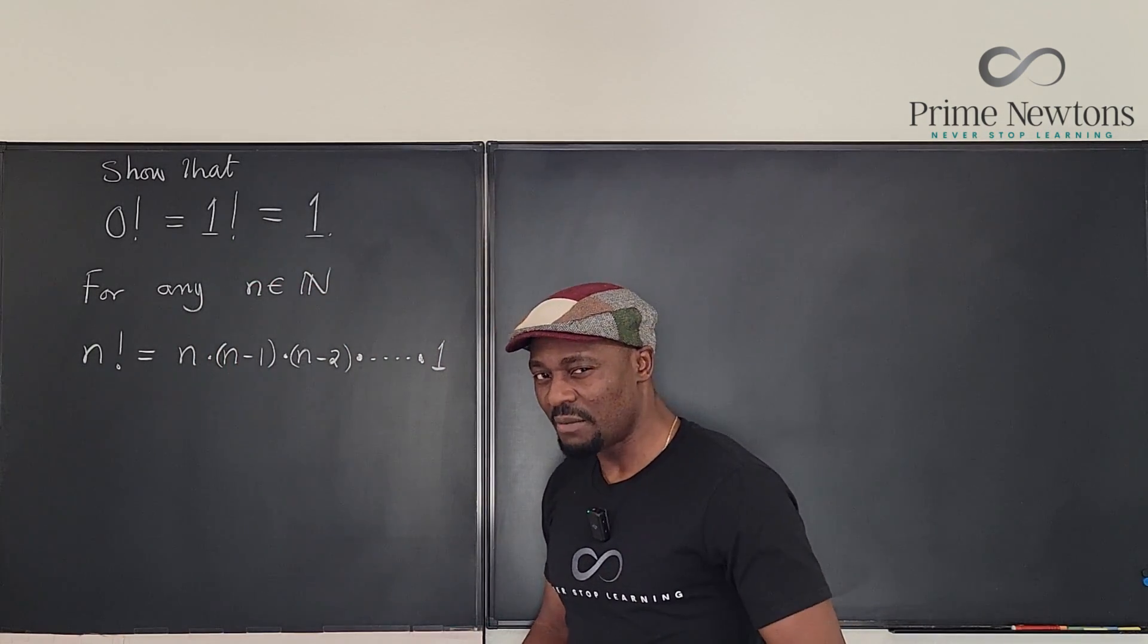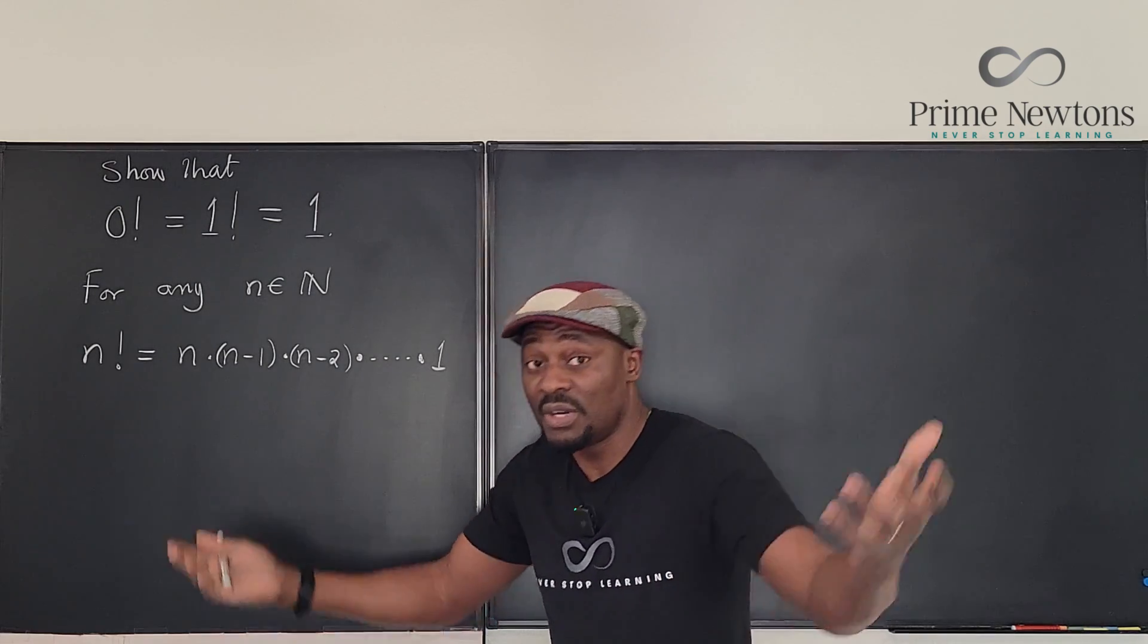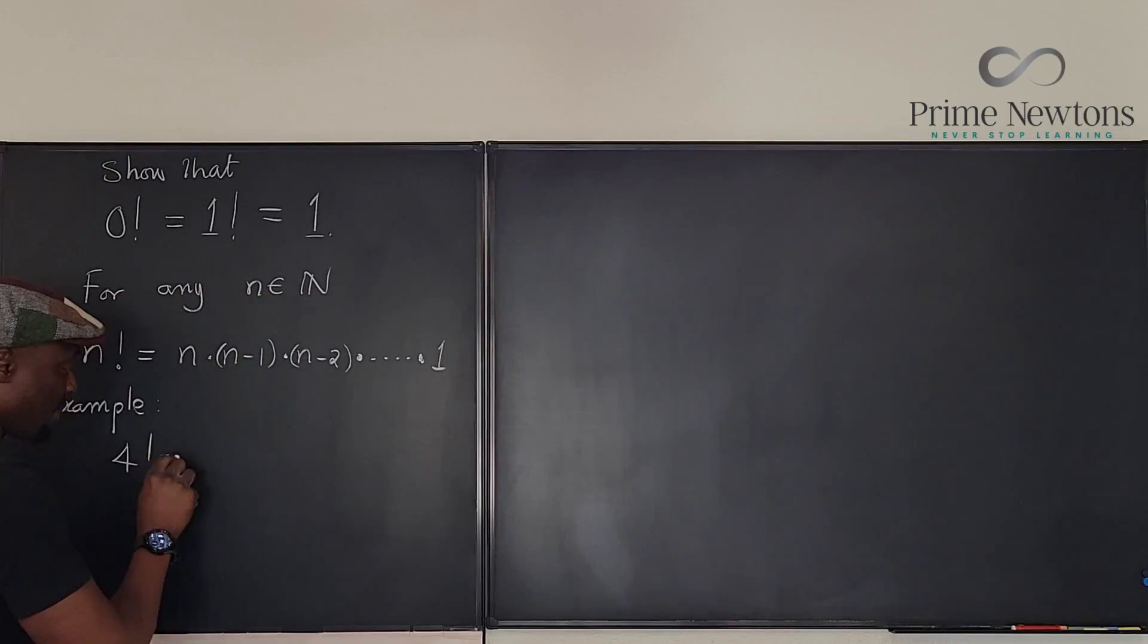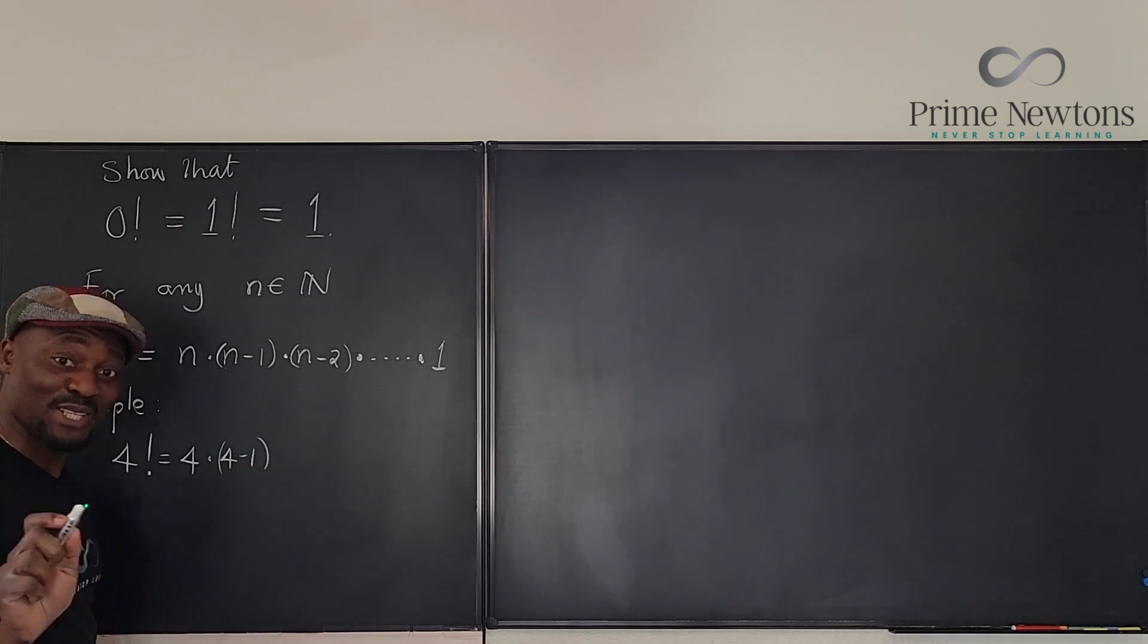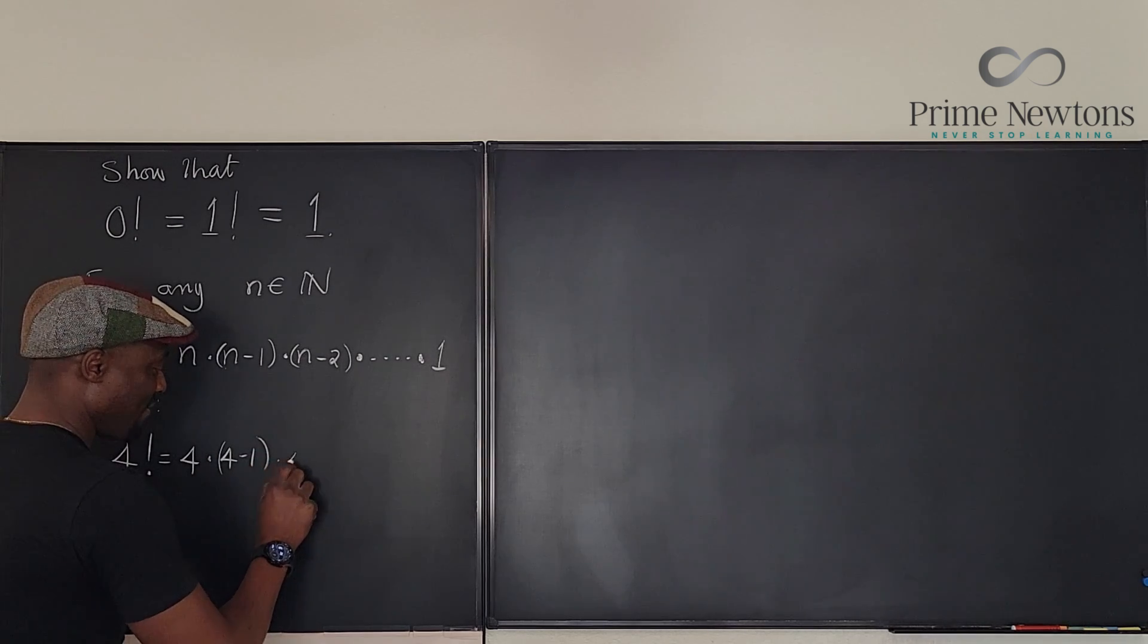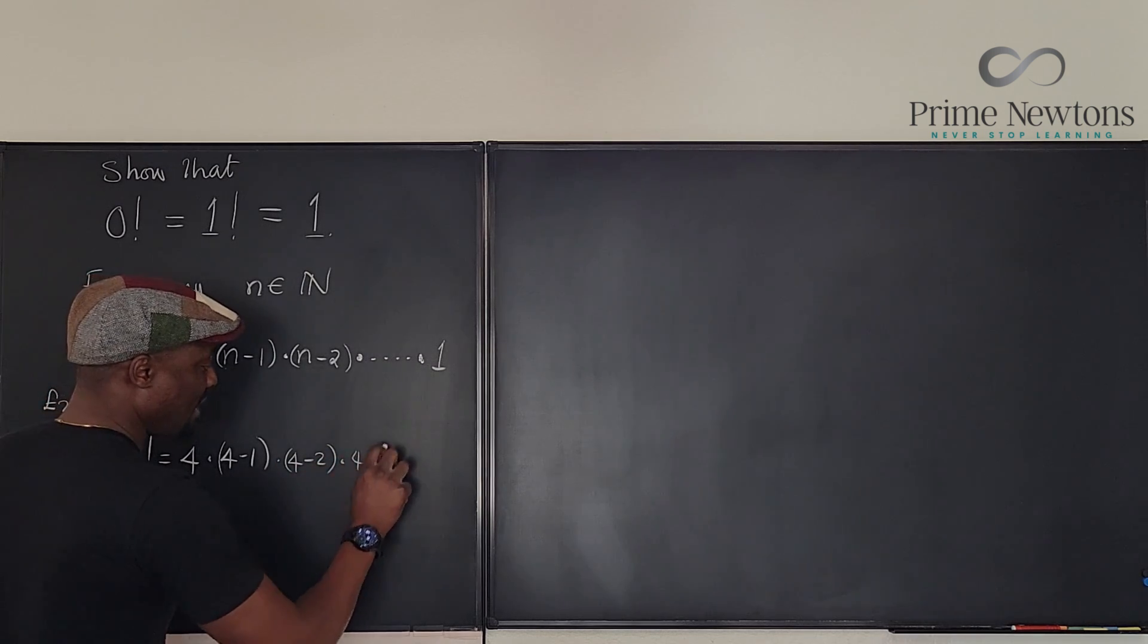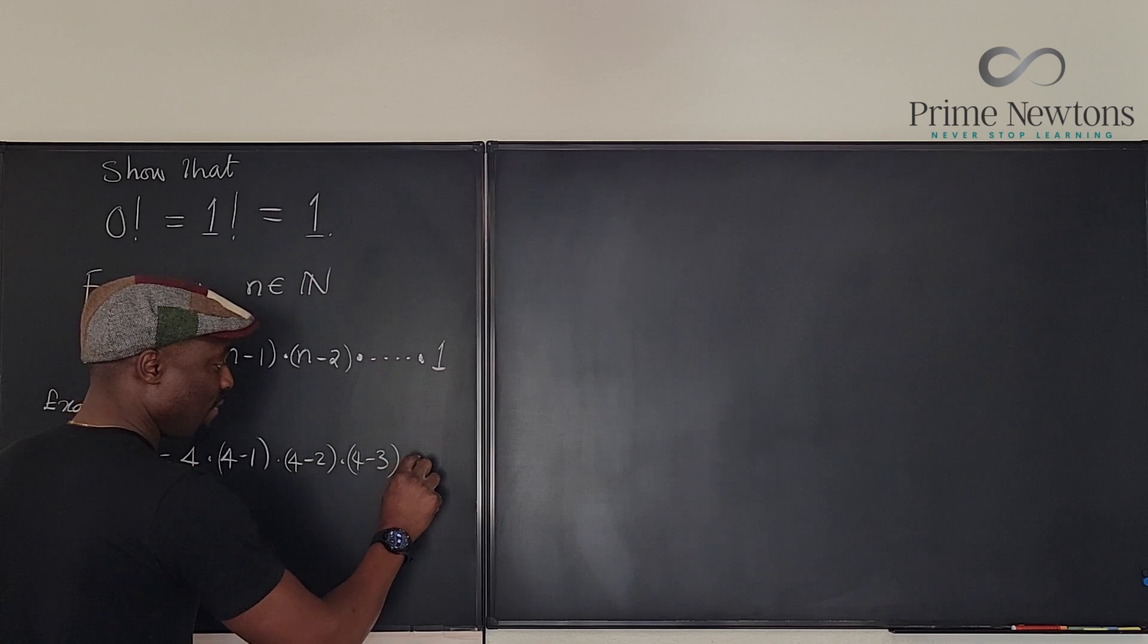So if you take an example, say you take 3 or 4, let's just take 4. 4 factorial, for example, is going to be start from 4 times 4 minus 1. Let's write it that way actually because there's a point I want to make. And then we have 4 minus 2, then we have 4 minus 3.